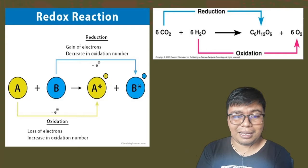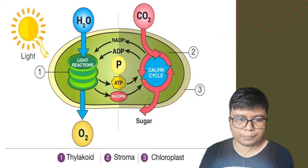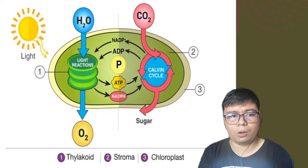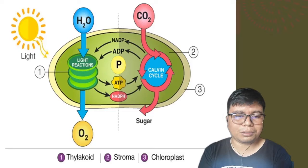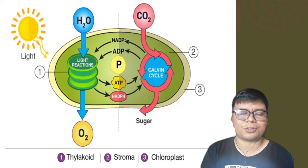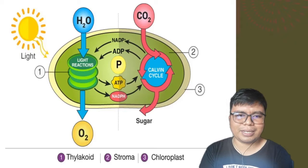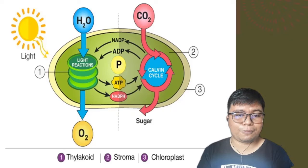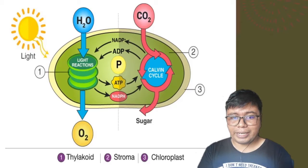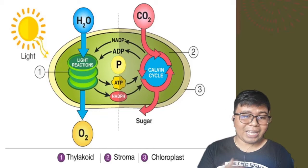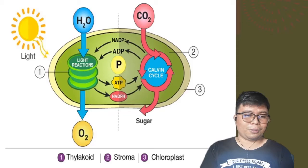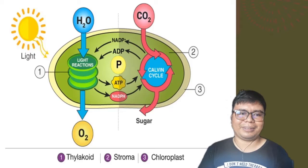Now let's move on to the next slide. In this slide, we have the overview diagram of what is happening during photosynthesis. There are two processes: we have the light-dependent reaction, or light reaction, and we have the light-independent reaction, or the dark reaction. During the light reaction, we need the radiance of the sun to fuel the machinery to create the materials which are necessary for the dark reaction.